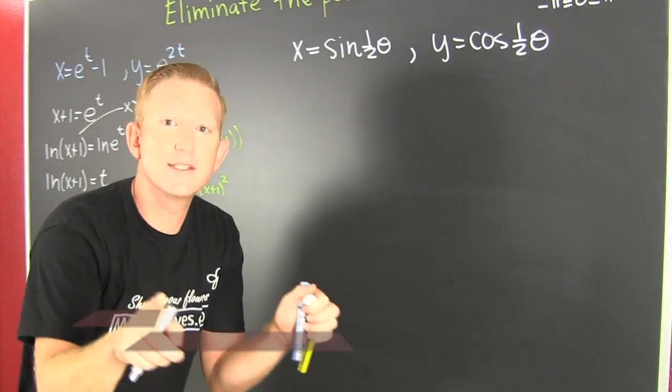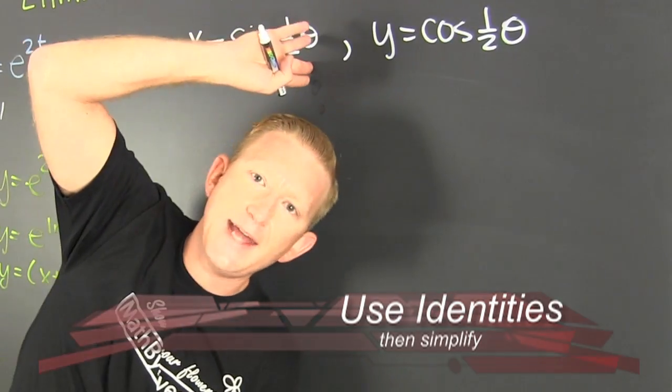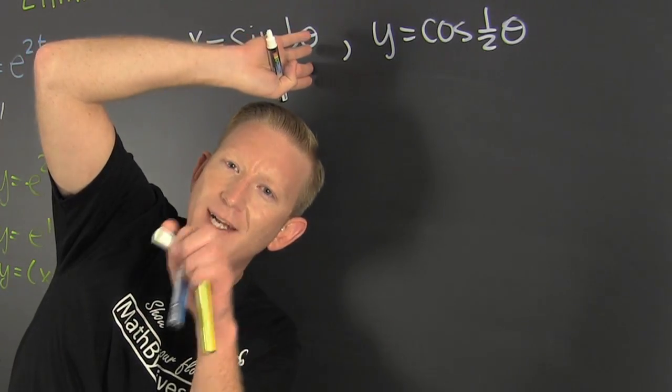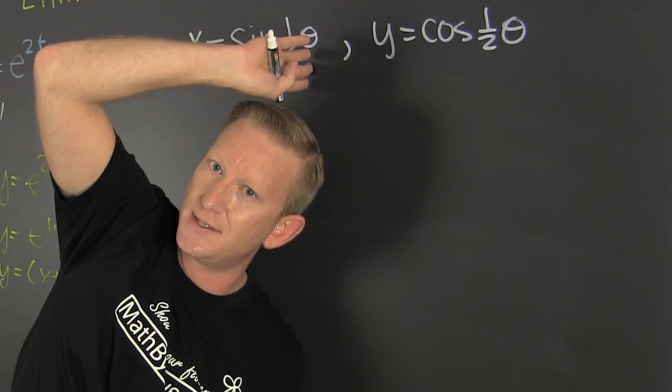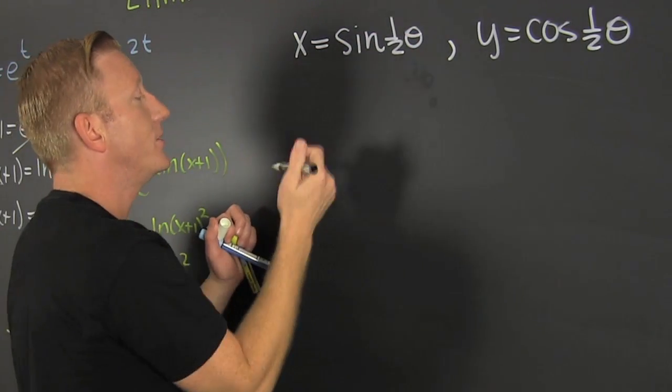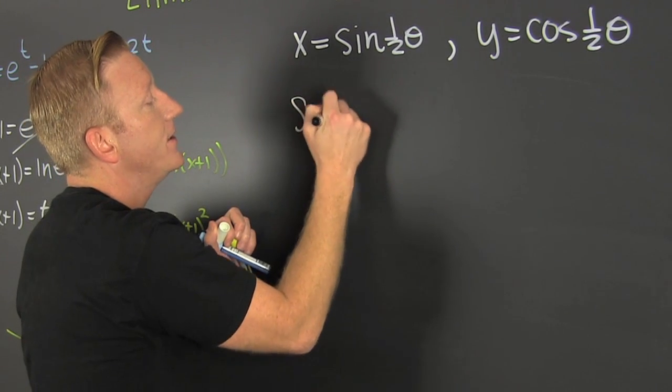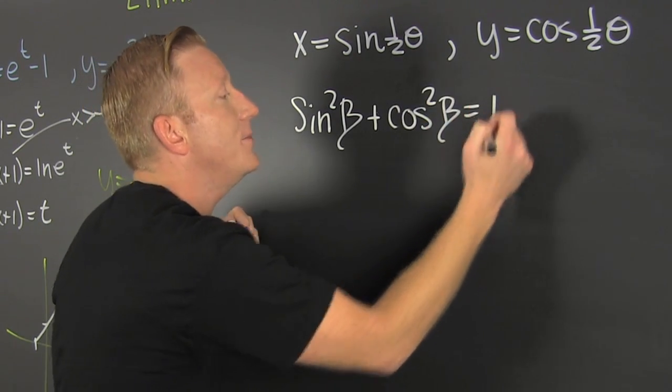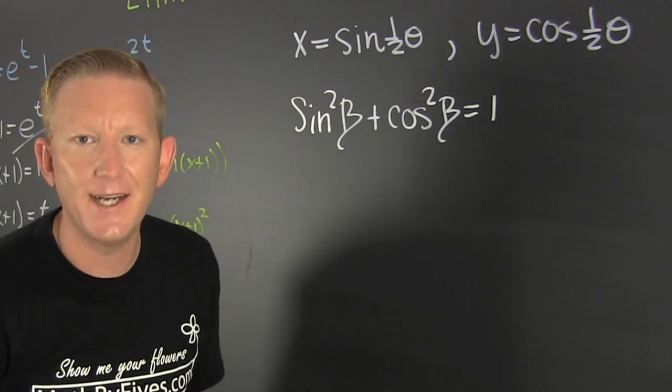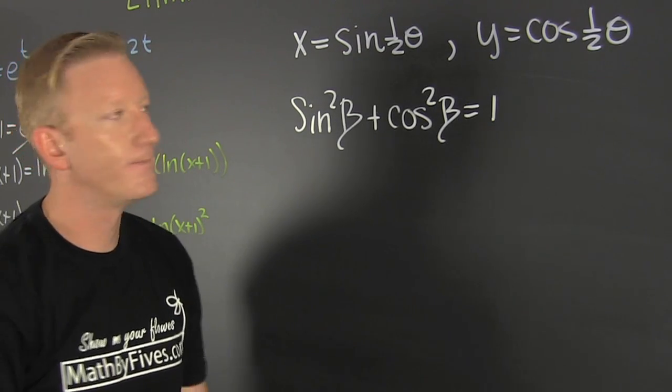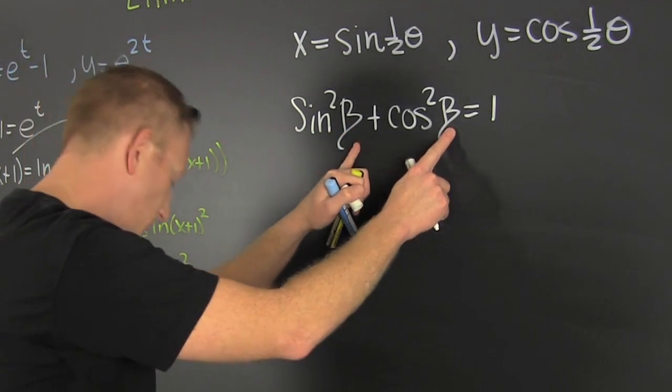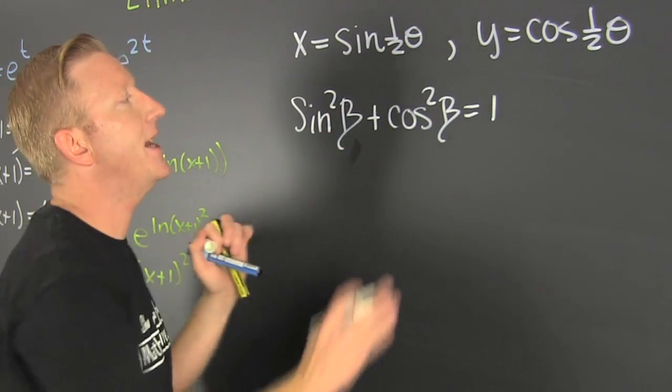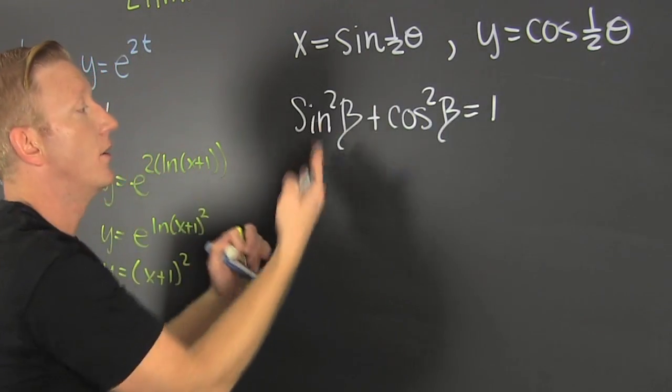So now I'm looking at this one over here. I want to graph that guy. Now when we see sine and cosine, then we're going to try to use identities. Which one? When we're eliminating this parameter, we're looking at the identity sine squared beta plus cosine squared beta, that's going to be equal to one. And that's the only trig identity you ever need to remember. It doesn't matter what my argument is.